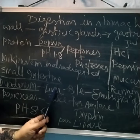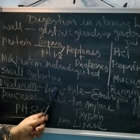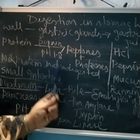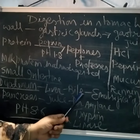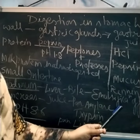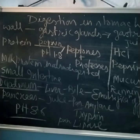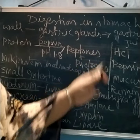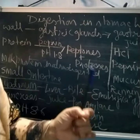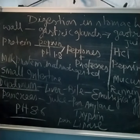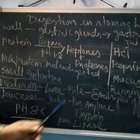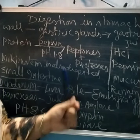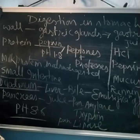The liver, which is the largest gland in the body, produces bile juice. Bile juice contains bile salts and bile pigments, and bile helps in the emulsification of fat — that is, breaking down large fat drops into small globules of fat so that enzymes can act on it properly.